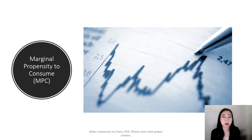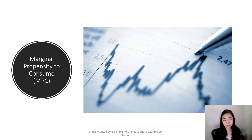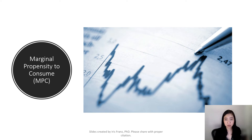Next, I'm going to talk about the marginal propensity to consume, also known as MPC, and also the marginal propensity to save, also known as MPS. They are intertwined.